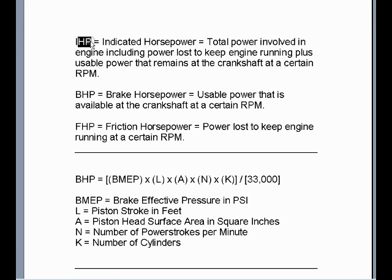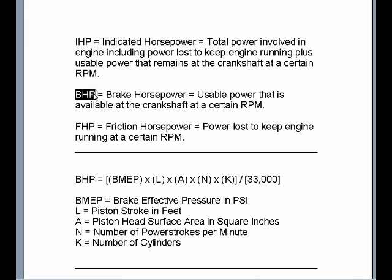Lastly, the horsepower stamped on the engine — if it's listed just as HP — is not the actual power you get to use. HP refers to indicated horsepower, which is the total power involved in the entire engine, including power lost to keep the engine running plus the usable power remaining at the crankshaft. It's the brake horsepower, BHP, you want to focus on. If it's not listed, you have to start with the foot-pounds torque at the given RPM torque curve rating, use the torque to calculate BMEP and then BHP. Friction horsepower is the power lost to keep the engine running; brake horsepower is the usable horsepower available at the crankshaft at a certain RPM.